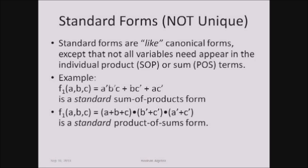In the case of standard forms, they may or may not contain all the variables within a sum term or as a product term. Let us see an example: f1 of a, b, c equals a-complement b-complement c plus bc-complement plus ac-complement. This is a standard form because here a, b, c are the three input variables. In canonical form, all three input variables definitely appear in each and every term, but in standard forms they may or may not.